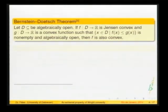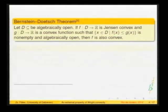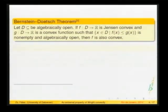Algebraic openness replaces the role of topological openness when we have no topology. Open sets are always algebraically open, but not conversely. The Bernstein-Doetsch theorem states: if D is algebraically open and a Jensen convex function is majorized by a convex function on this set, then the dominated function is also convex — so convexity of the majorizing function is inherited.